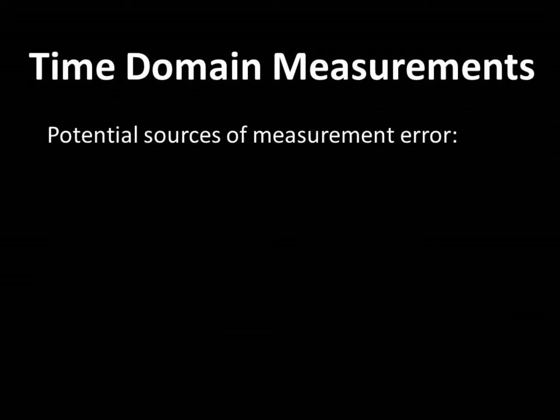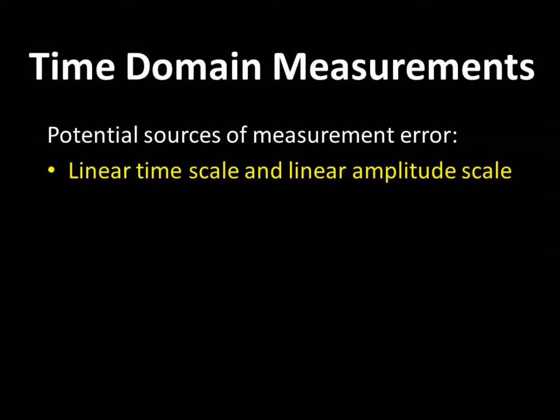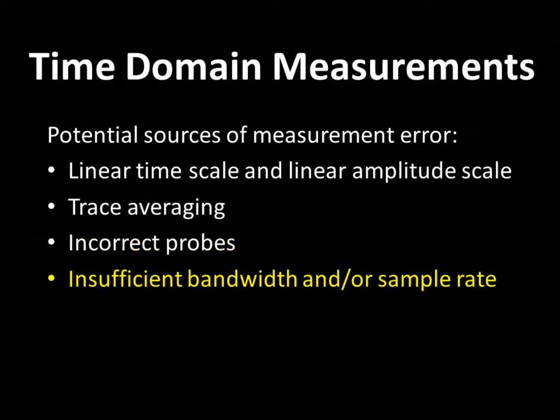We often get into trouble measuring in the time domain, and this is often due to the oscilloscope's linear time scale and linear amplitude scale, as we will see shortly. Other problems encountered with time domain measurements are due to the use of trace averaging or incorrect probes. Using instruments with insufficient bandwidth and or sample rate for the measurement can also lead to measurement errors or cause us to miss important details.